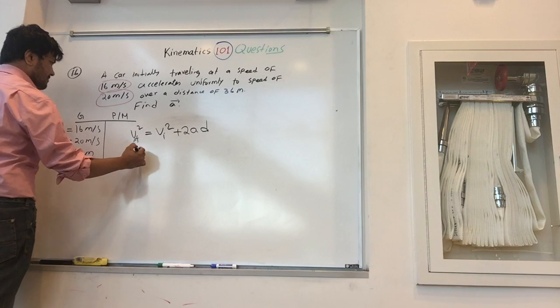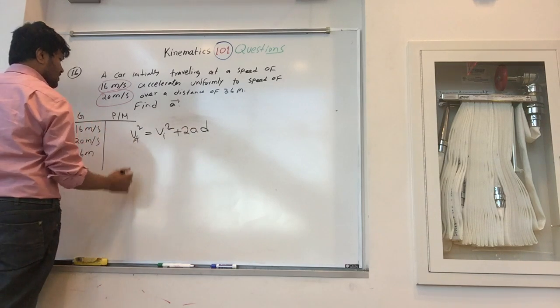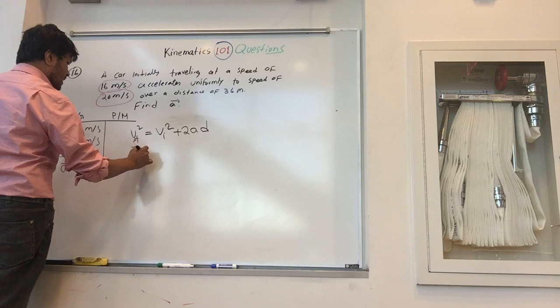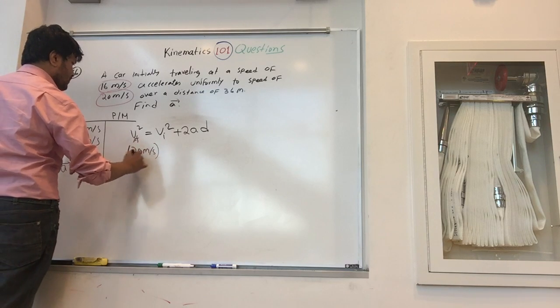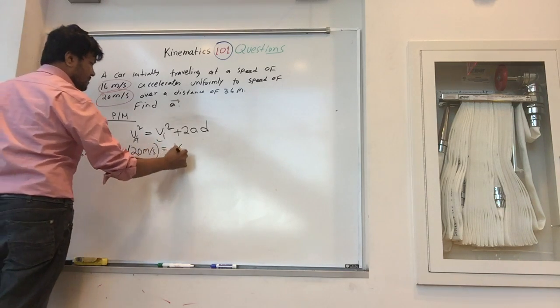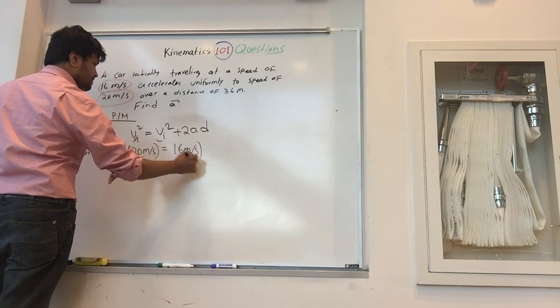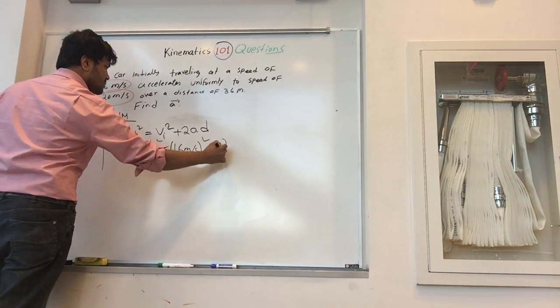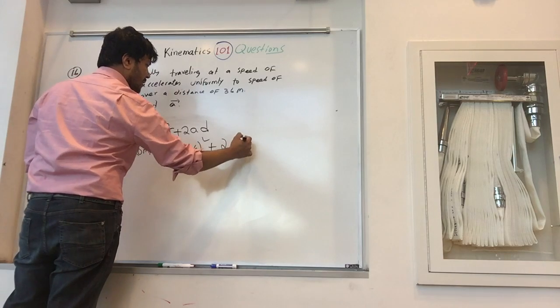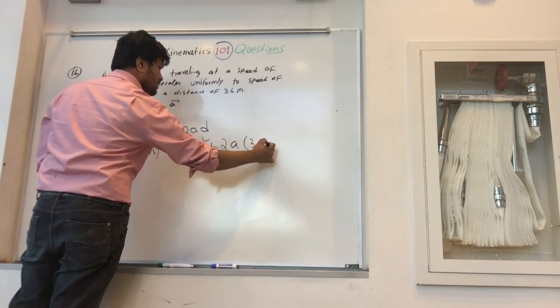You want to find the acceleration. So 20 meters per second squared minus 16 meters per second squared plus 2a times 36 meters.